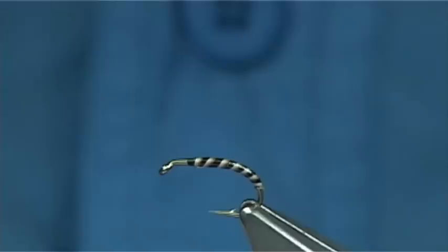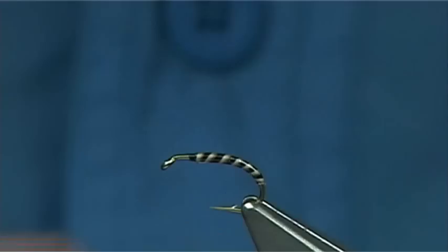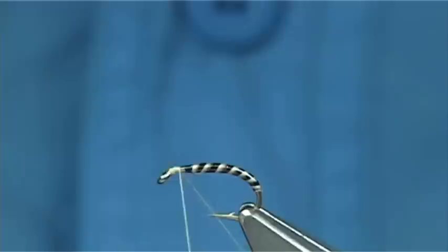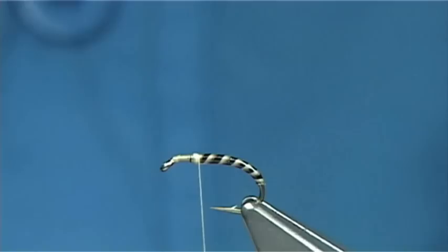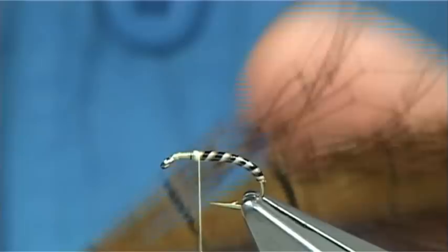Now I'm going to change the thread to a light cahill in yellow. This just lightens up the body. This colour combination works really well when the olives are coming off, or any light coloured fly, the quill body is really nice.